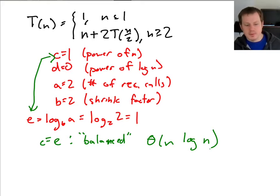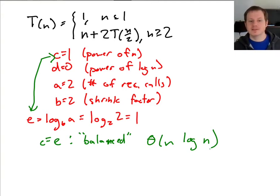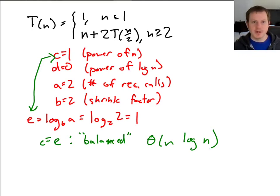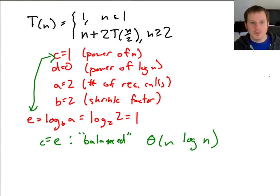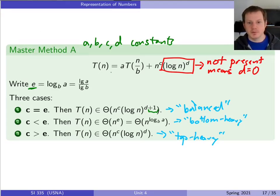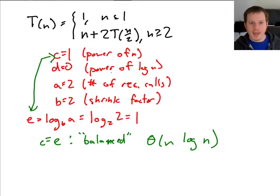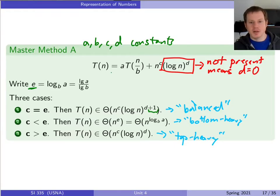I hope this example illustrates the power of the master method, but also how it can be a little annoying — you have to figure out what these constants are, then figure out which case you're in, and then plug into the formula. The advantage is you don't have to do a full series expansion. The disadvantage is you have to be careful about how your particular example fits into this general formula.